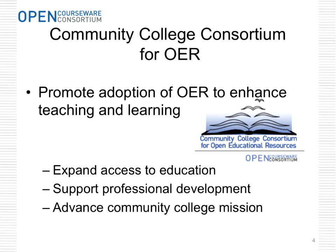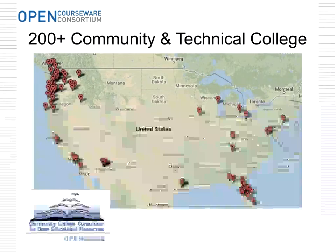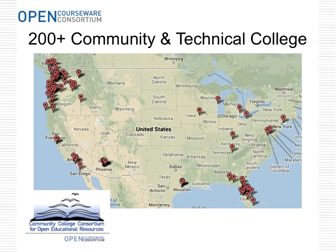The community college group within the open courseware consortium is devoted to promoting the adoption of OER to enhance teaching and learning. We support professional development through webinars and hope to advance the community college mission of access. Our membership is a bit heavy in the northwest and west coast. The California community college system has recently become a member, bringing in 112 community colleges. Florida is a member and we're slowly filling out the center of the map as well.